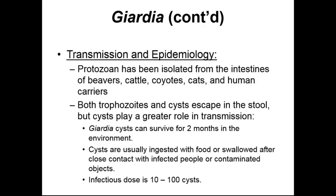This protozoa has been isolated from the intestines of many different mammals, including beavers, cattle, coyotes, cats, and humans. Both the trophozoite (active stage) and the cyst (dormant stage) can escape in the stool of infected patients, but cysts play the greater role in transmission. In the dormant cyst stage, it can remain viable in the environment for up to two months. Cysts are typically ingested with food or water after close contact with an infected individual. The infectious dose is between 10 and 100 cysts — a relatively low concentration.